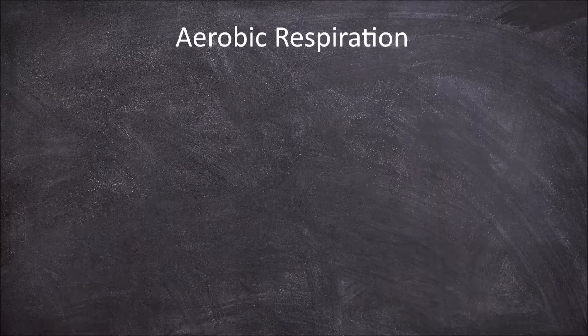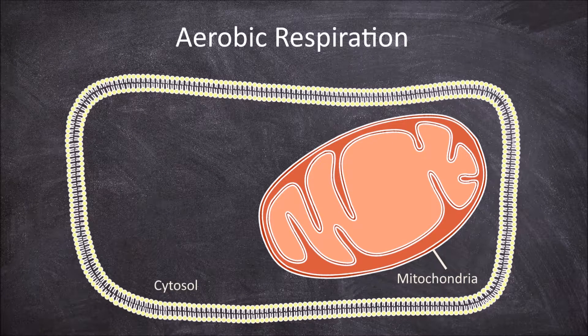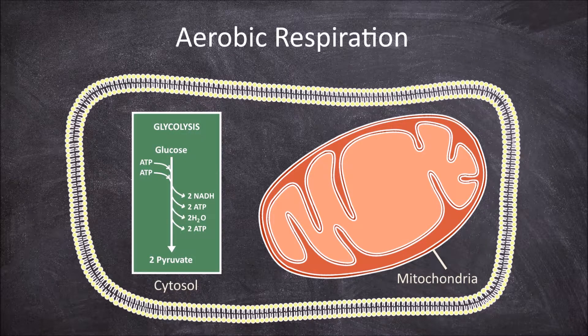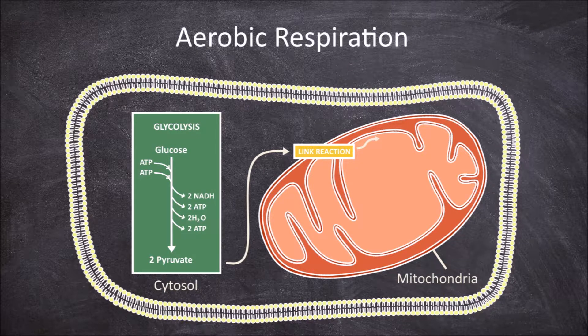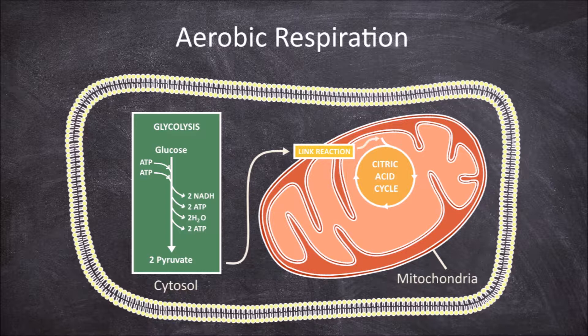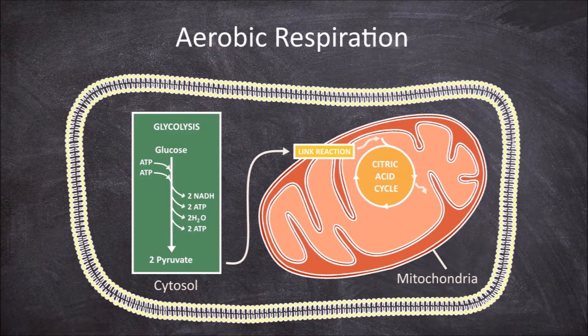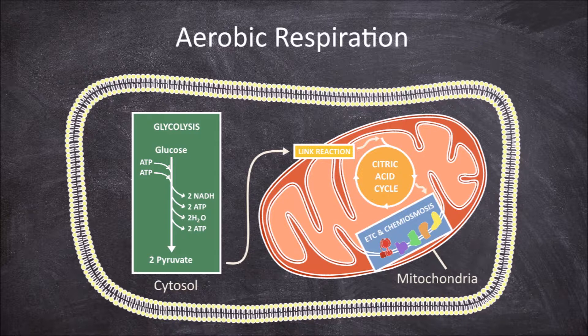Aerobic respiration occurs within cells. It starts with glycolysis in the cytosol of the cell, then goes through the link reaction moving into the matrix of the mitochondria. It then goes through the citric acid cycle within the mitochondria matrix, followed by the electron transport chain and chemiosmosis in the inner mitochondrial membrane, producing energy in the form of ATP.